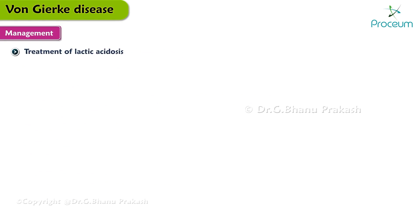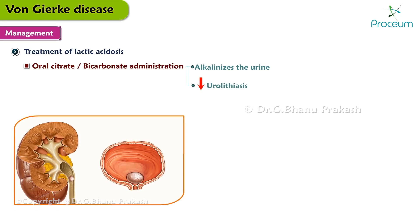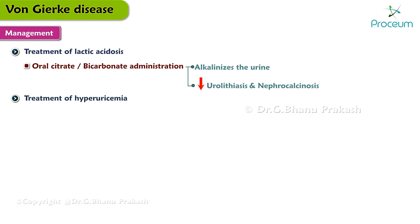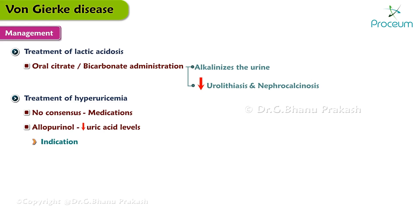The treatment of lactic acidosis is as follows. Lactic acidosis, if persistent, can be treated with oral citrate or bicarbonate administration, which also alkalinizes the urine and decreases the risk of urolithiasis and nephrocalcinosis. Regarding hyperuricemia, there is no consensus as to when to treat with medications. Allopurinol lowers uric acid levels and can be used in patients with persistently elevated uric acid or recurrent attacks of gout. Colchicine may be used during acute attacks. The use of medium-chain triglyceride oil was shown in a small study to improve uric acid levels and reduce carbohydrate requirements.